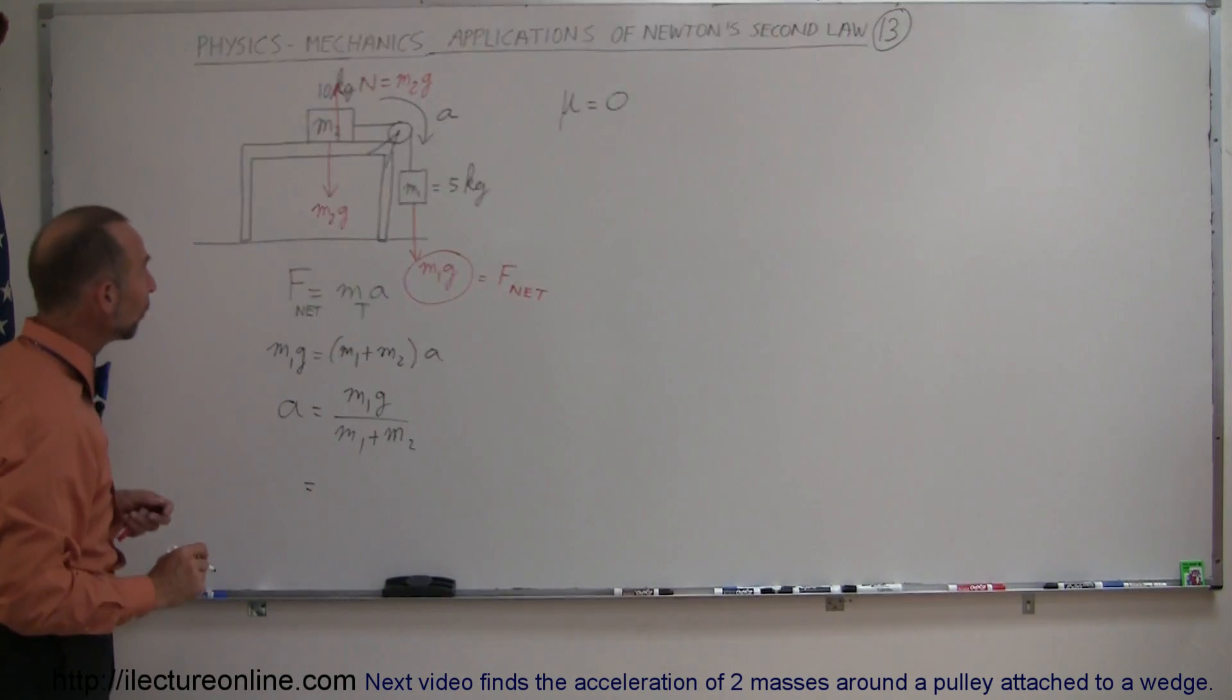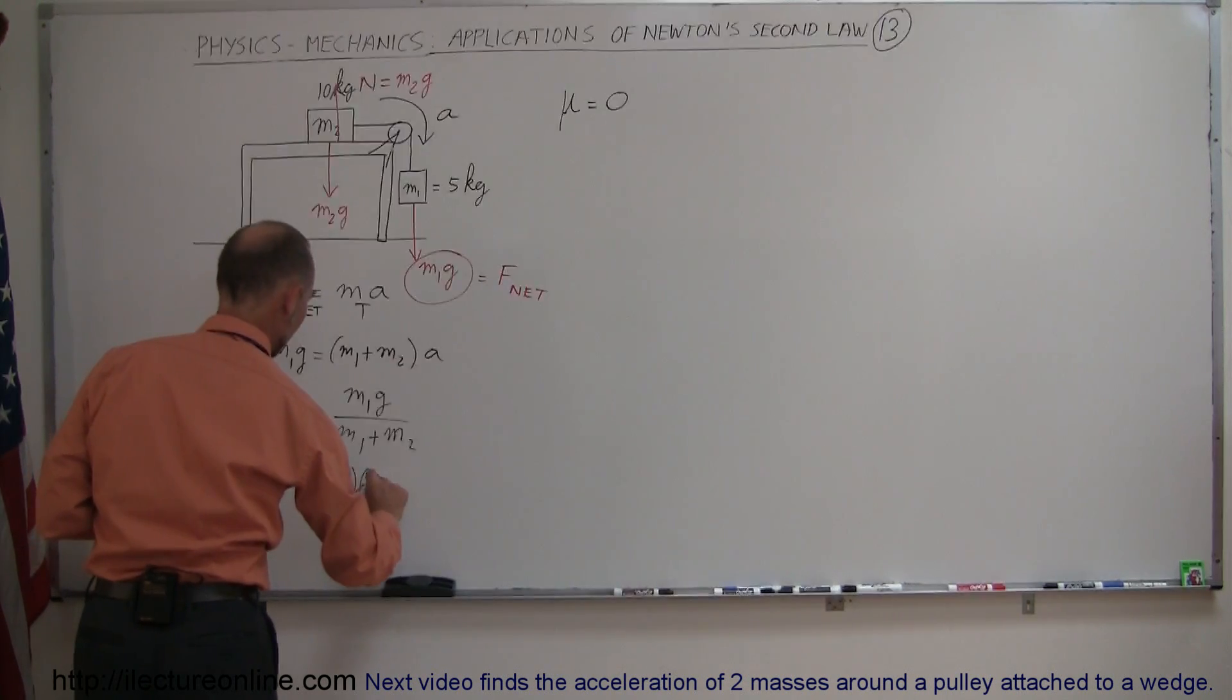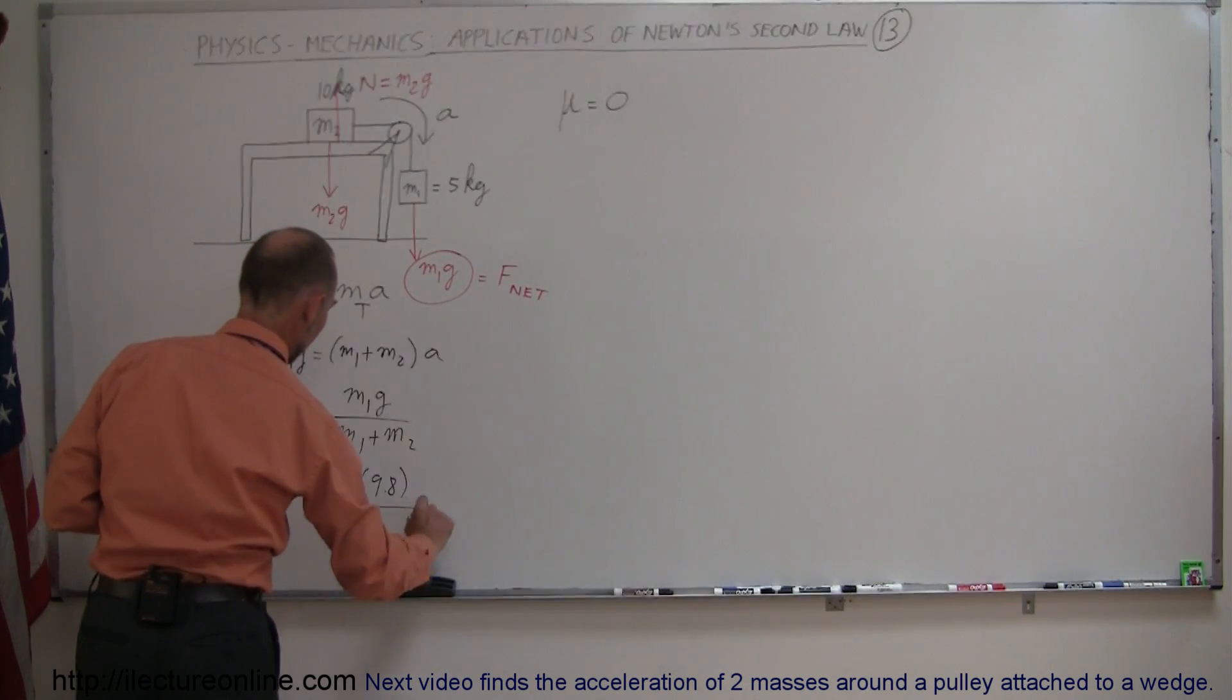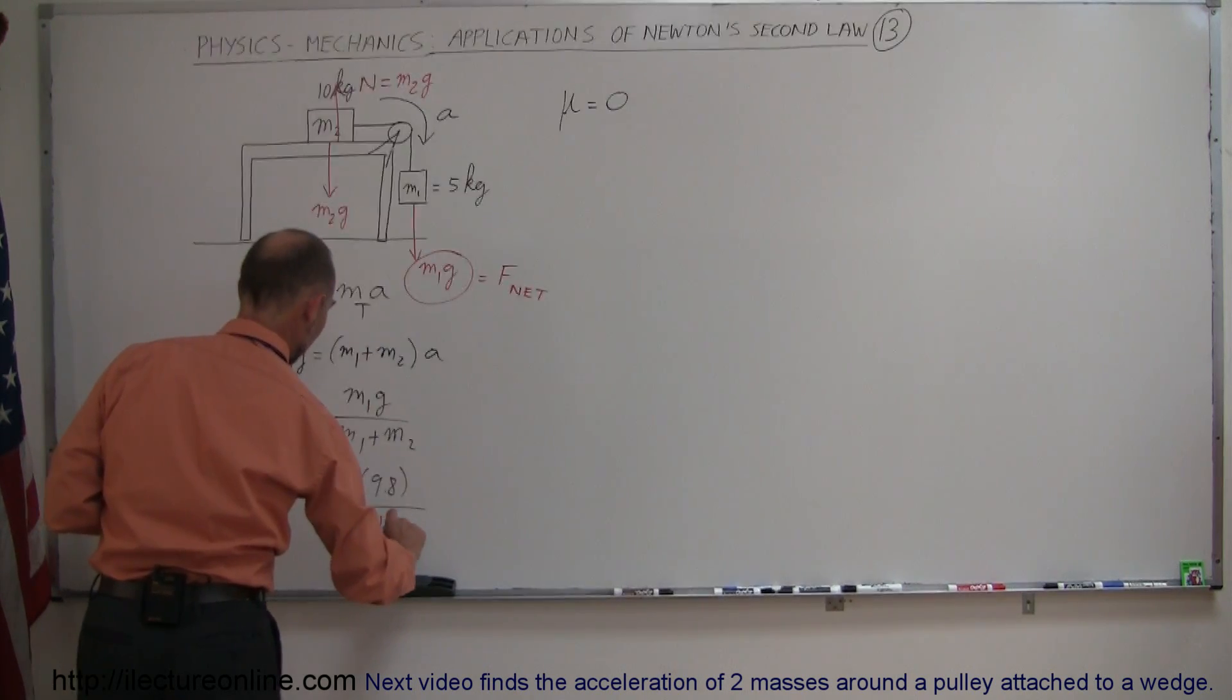Alright, plug in the numbers, so M1 is 5 kilograms, G is 9.8 meters per second squared, M1 is 5 kilograms, M2 is 10 kilograms.